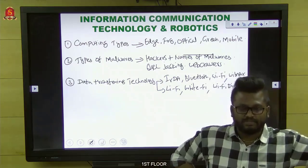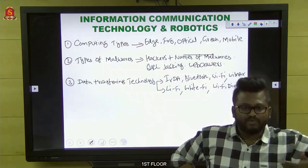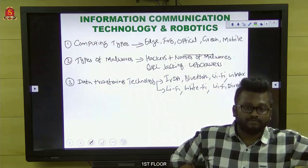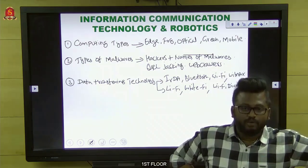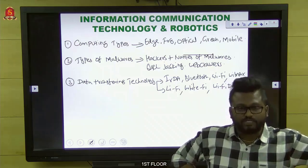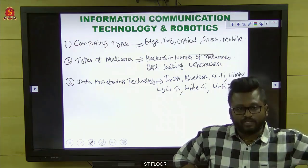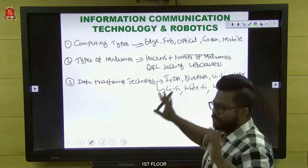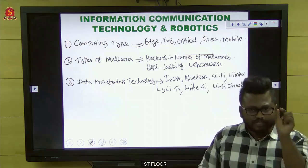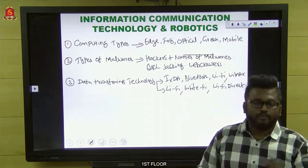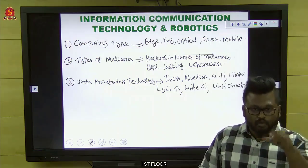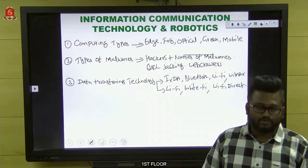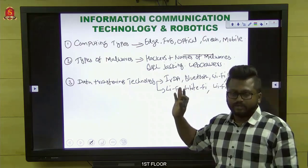Complete the data transferring technology topic with recent examples. Wi-Fi Direct: the ShareIt application used on smartphones works based on Wi-Fi Direct. FASTag stickers mounted on vehicles for crossing e-toll plazas work based on RFID. Metro station cards work based on NFC. One Nation One Card uses NFC and chip-based technology. Indian Post Office payment cards use QR codes only — no magnetic strip, no IC chip. Complete the topic with such market-familiar examples.